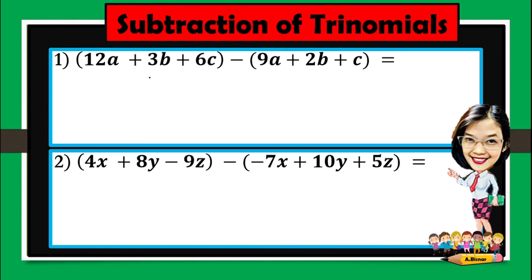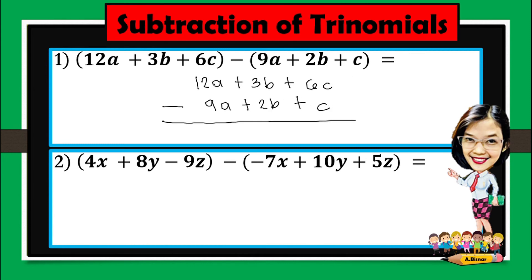Now subtraction of trinomials. The given is 12a plus 3b plus 6c minus 9a plus 2b plus c. So: 12a minus 9a is 3a, 3b minus 2b is just b, and 6c minus c is 5c. The answer is 3a plus b plus 5c.